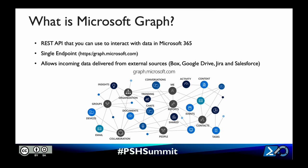Microsoft 365 is a suite of services that includes Office 365 — think Exchange Online with email, contacts, and calendar — as well as Teams, SharePoint, Azure Active Directory, OneNote, OneDrive, Yammer, and more. It also extends to Enterprise Mobility and Security and the Windows 10 family of services. The Microsoft Graph API also allows us to bring in third-party data using Microsoft Graph connectors — from vendors like Box, Google Drive, Jira, and Salesforce.